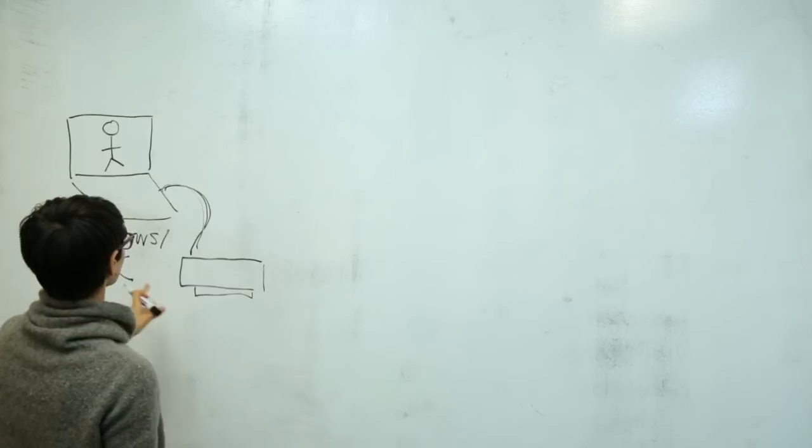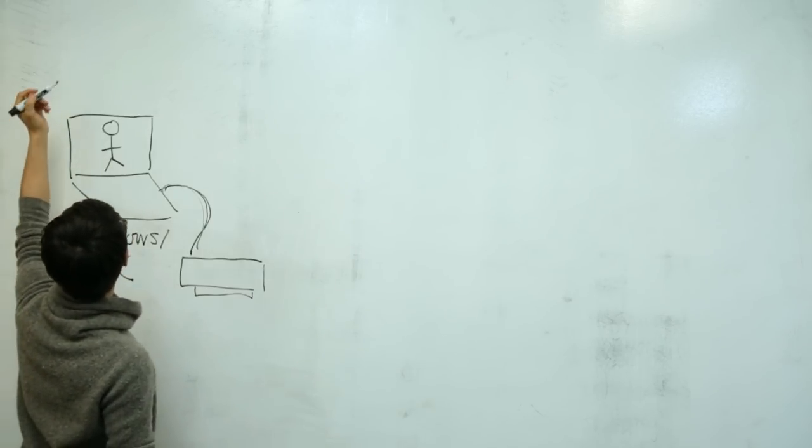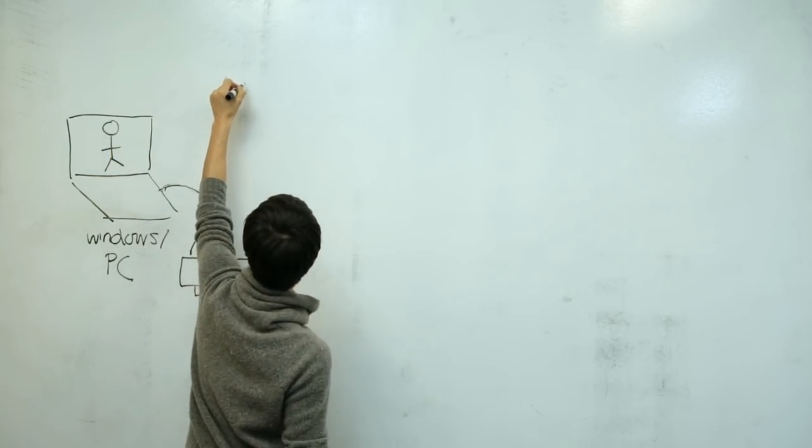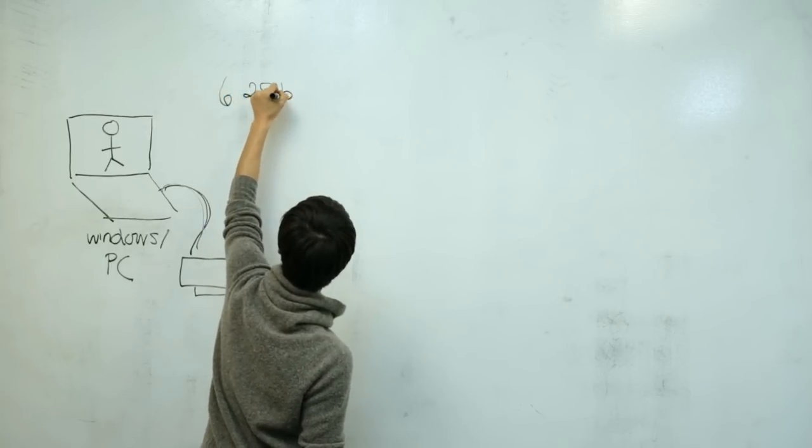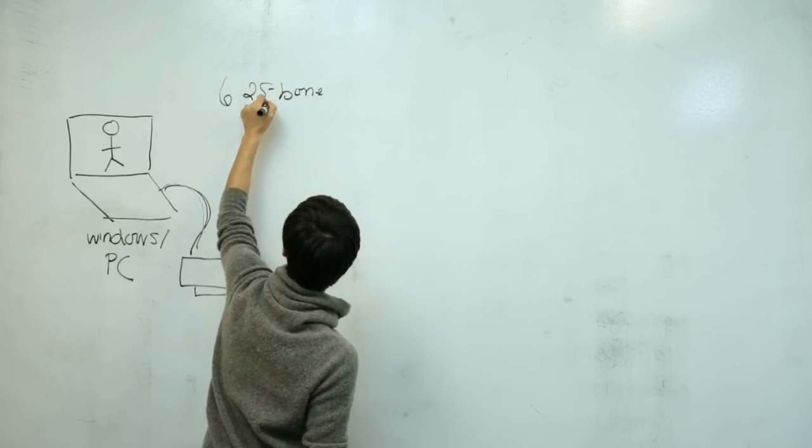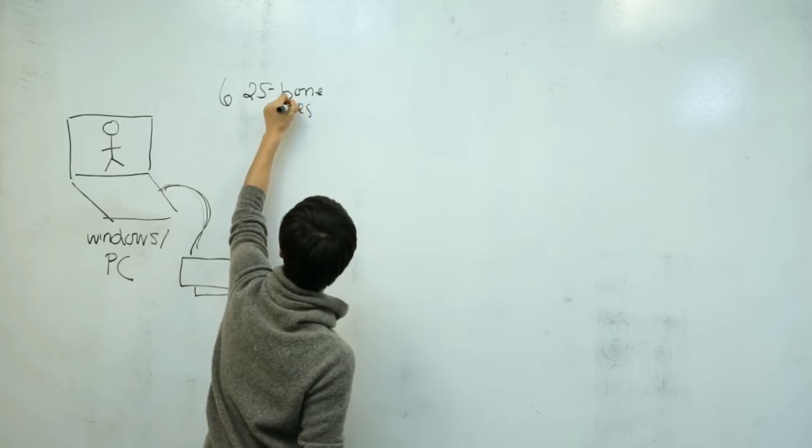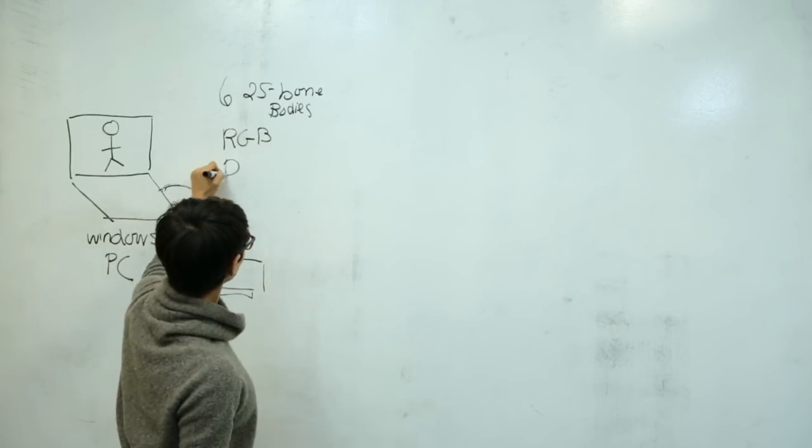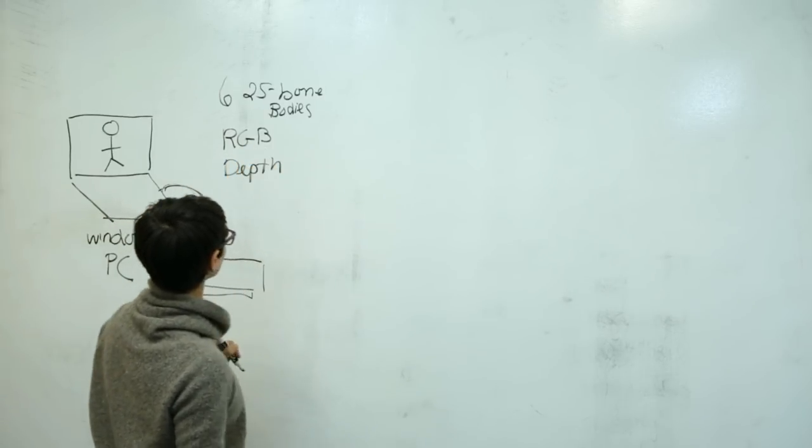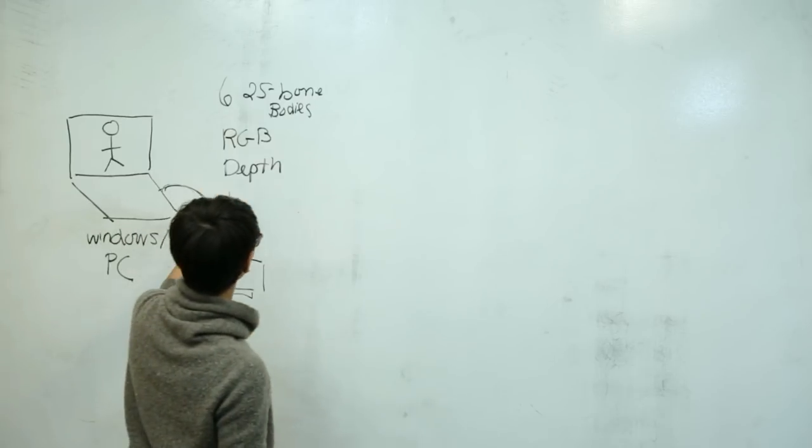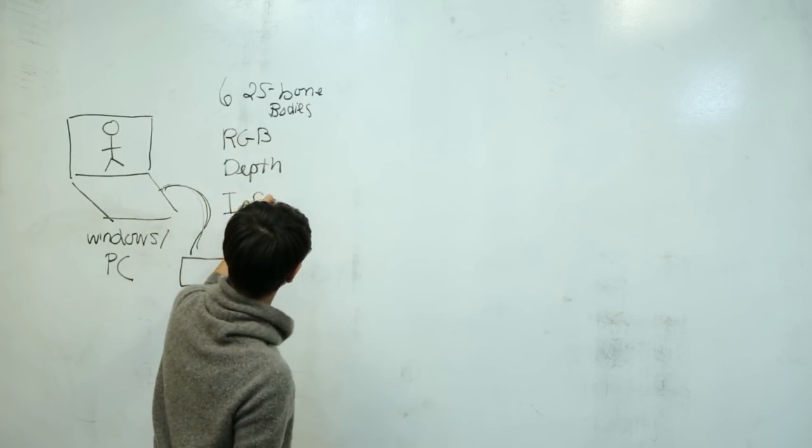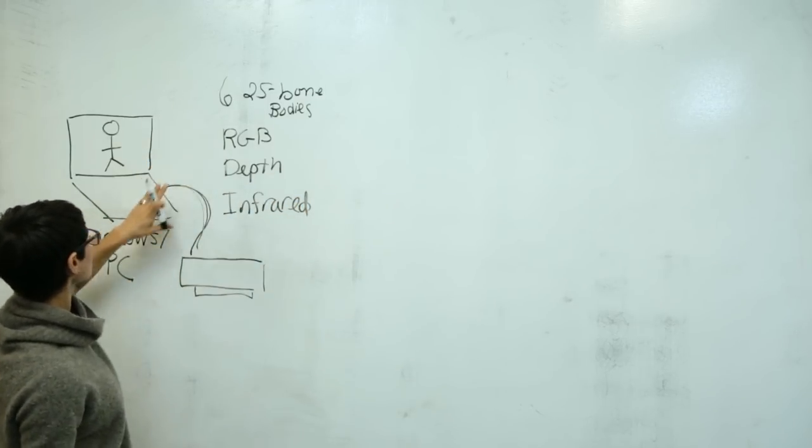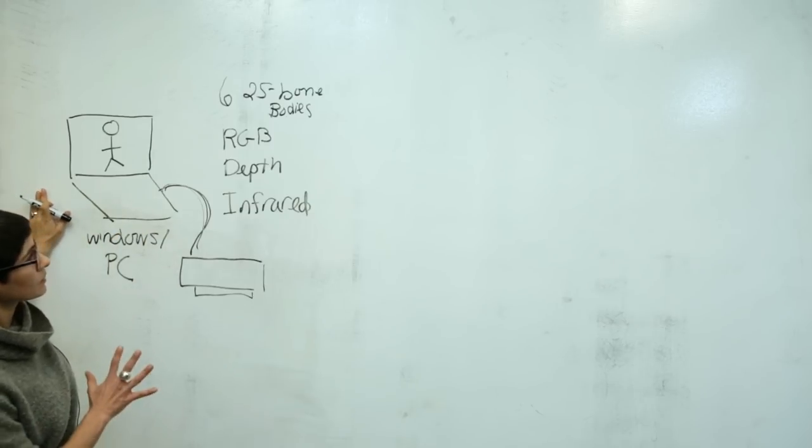And then you have access to all these great things with the Kinect. The Kinect 2 gets, let's see, where's a good place to write? Okay, I'll write over here, we get six 25 bone skeletons. We get an RGB feed at 1920x1080, and also a depth feed, which is 512x424, and then an infrared feed as well, which is the same resolution as the depth. So this one little camera gives us all this great stuff, which you get on your PC. So that's the typical setup.